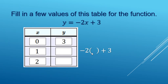Next row, again, negative 2 times whatever x is plus 3. x is a 1. Negative 2 times 1. Multiplication first. Now the addition.